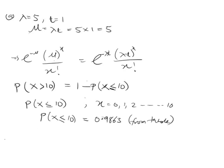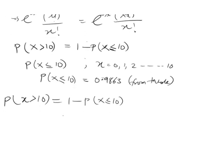So P(X ≤ 10) = 0.9863, from the table. But this is not what we are looking for. We want P(X > 10), the probability that the hospital can no longer accommodate the traffic. Therefore, P(X > 10) = 1 minus 0.9863 = 0.0137. This is the probability that the staff can no longer accommodate in a given hour. That's all for Part A.